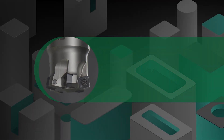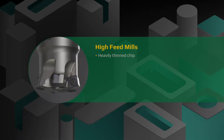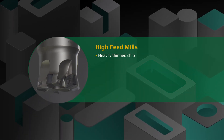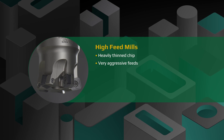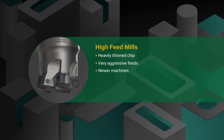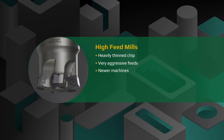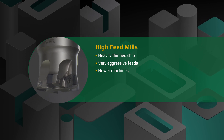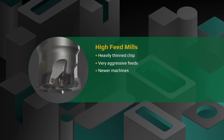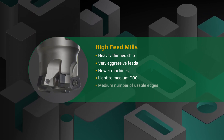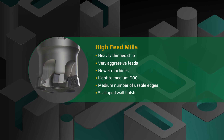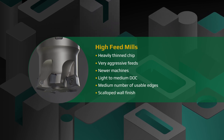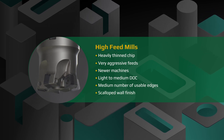High feed cutters create a very thin chip requiring much higher feed rates than normal. As such, they're best suited to newer machines capable of fast feed rates while still maintaining part accuracy. High feed cutters are operated at a light to medium depth of cut and do yield a scalloped wall finish. They create primarily axial cutting forces, or into the spindle, making them an excellent choice for long reach applications.